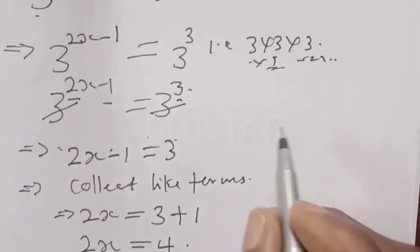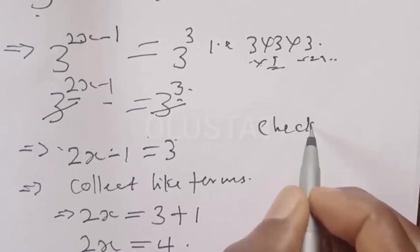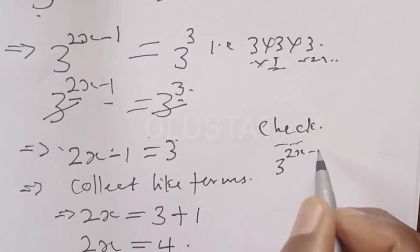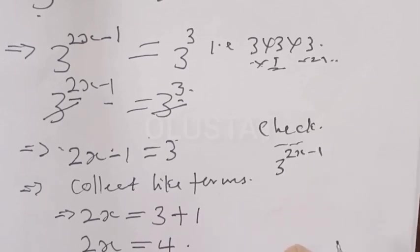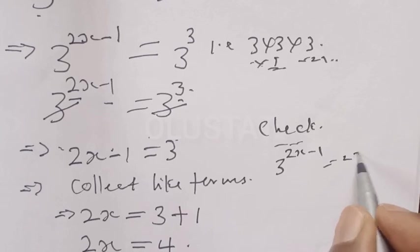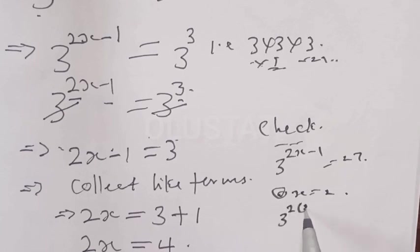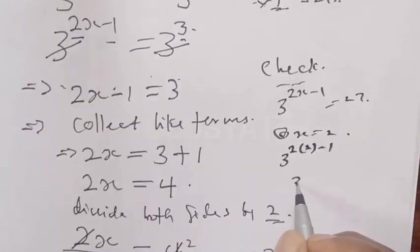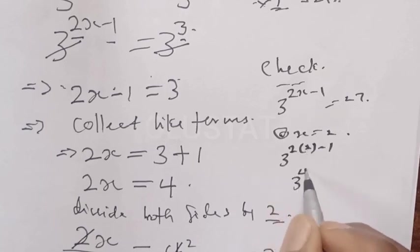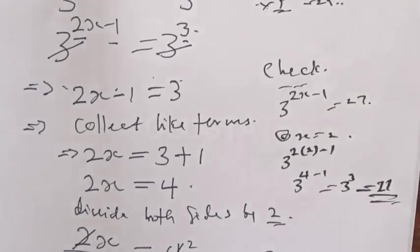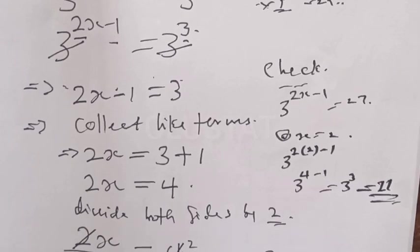Let's check. The left-hand side must be equal to the right-hand side, which is 27. At x equal to 2, we have 3 raised to power 2 times 2 minus 1, which is 3 raised to power 4 minus 1, equal to 3 raised to power 3. And 3 raised to power 3 is equal to 27. You can see that our answer is correct.